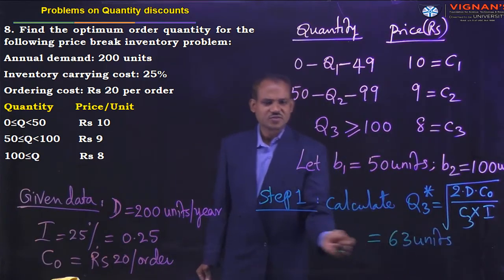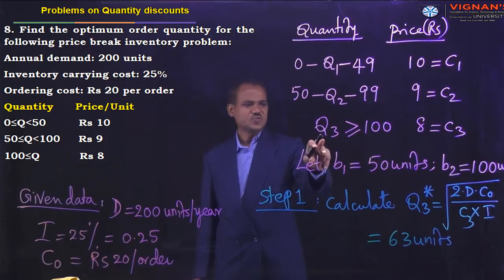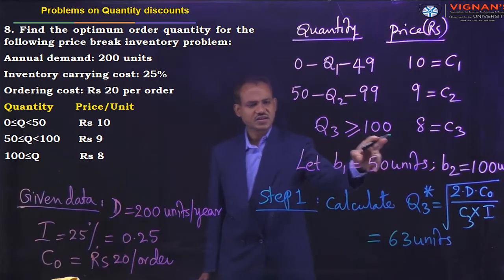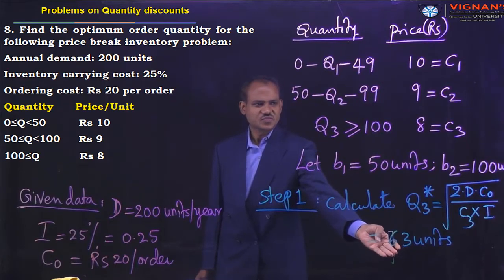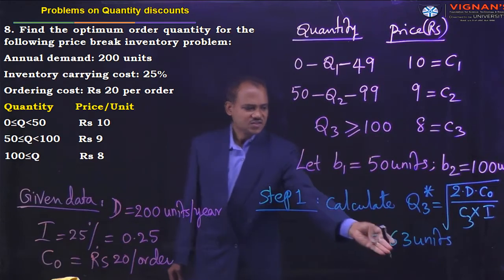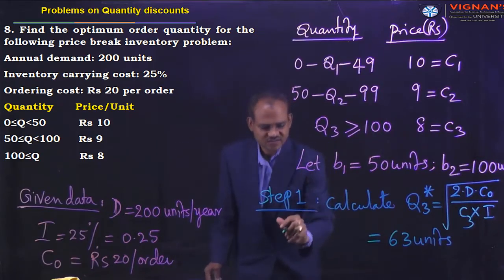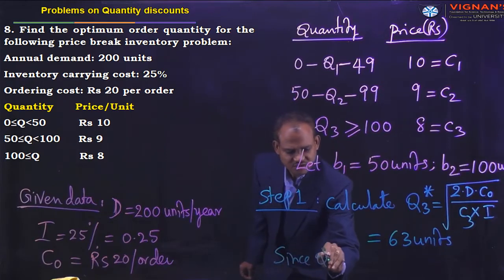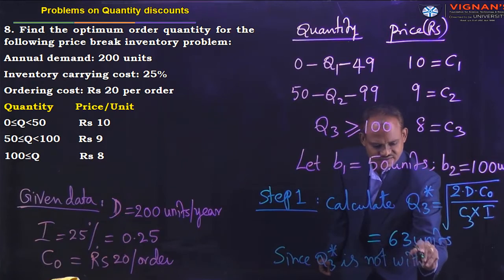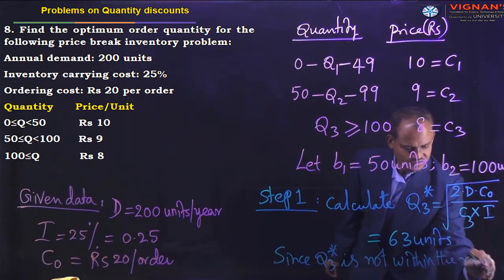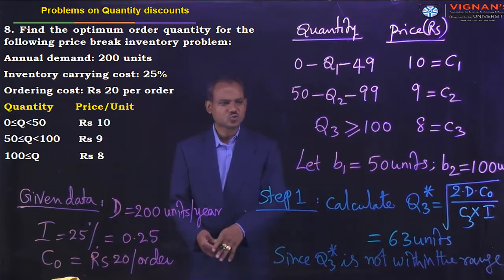Now check whether the obtained Q3 star lies within the Q3 range (≥ 100). The obtained value of 63 is not within the range — it is less than 100, which is the minimum. Since Q3 star is not within the range, move to step 2.